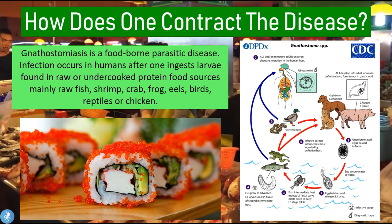Nastostomiasis is actually a foodborne parasitic disease, meaning the infection occurs in humans after one ingests larvae found in raw or undercooked protein food sources — mainly raw fish, shrimp, crab, frogs, eels, birds, reptiles, or even chicken. If we take a closer look at the image on the right side of the screen, it shows us what the life cycle of the nastostoma parasite actually looks like.